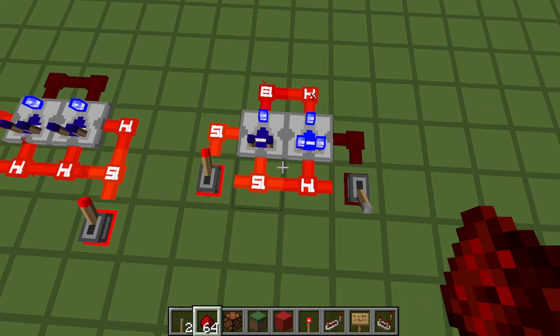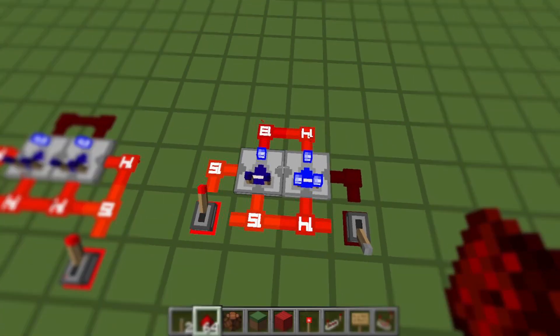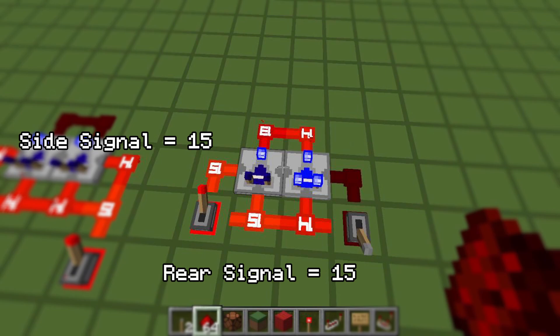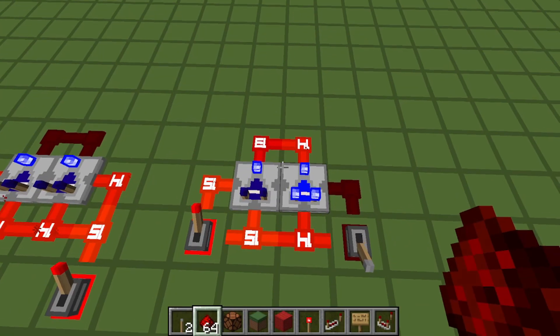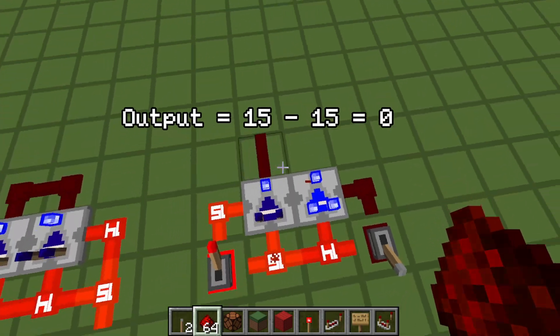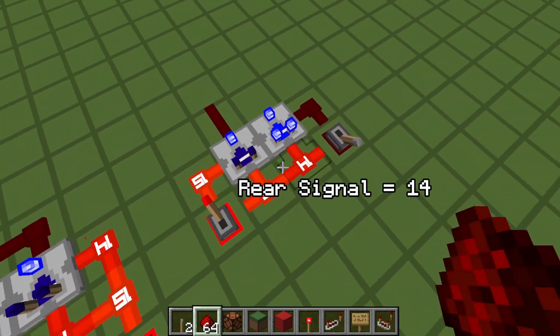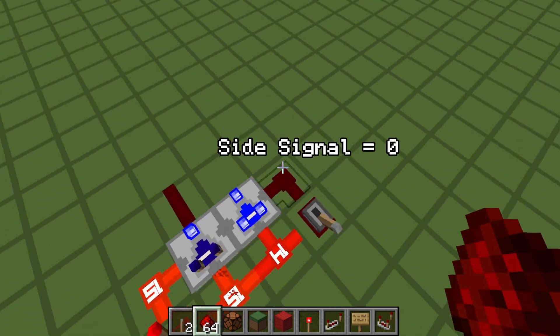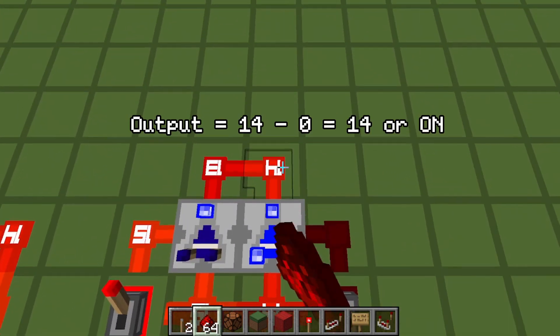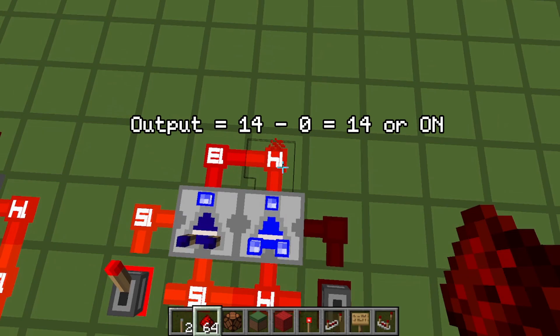It works by using the comparator in subtract mode, so the signal from the rear and side will be subtracted. Since both signals are equal, the output is zero, but since we're also powering another comparator and the other lever's signal is zero, then the input will remain the same for one comparator, thus outputting one.